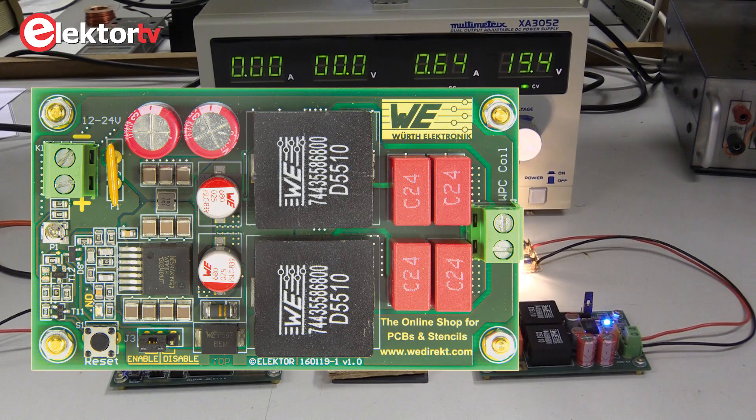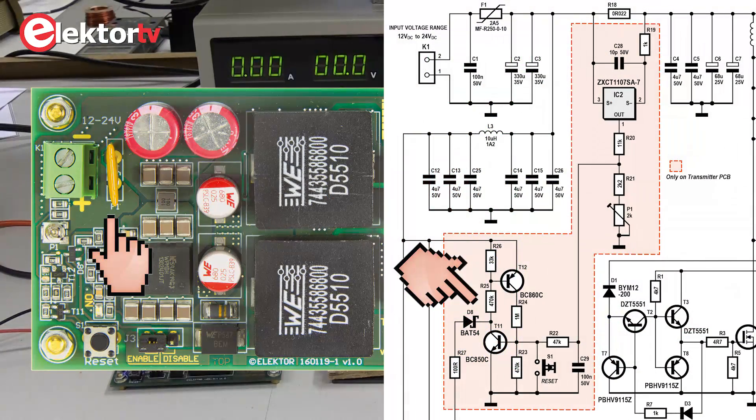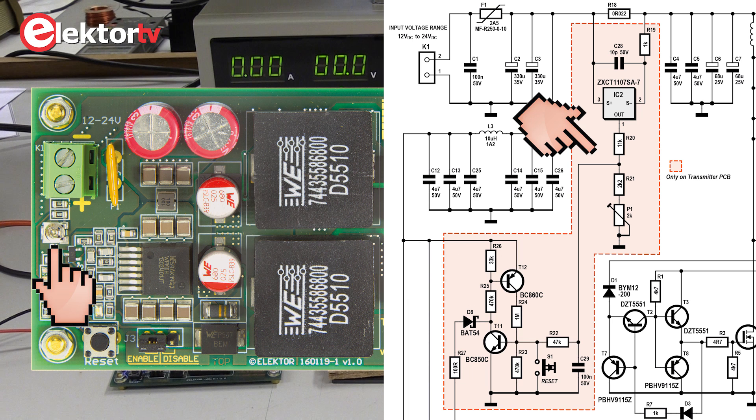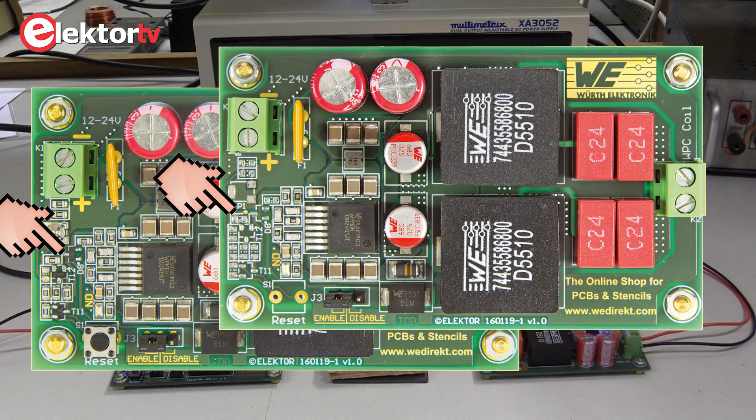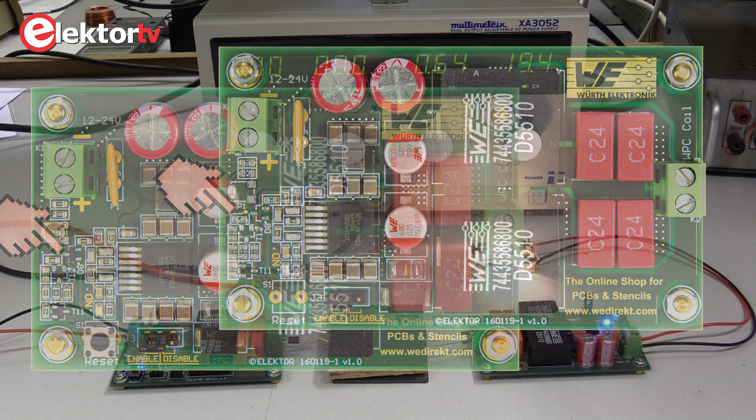On the transmitter PCB we added a PTC resettable fuse and an adjustable electronic fuse to protect the switching FETs against too large currents. On the receiver PCB these parts can be left unmounted.